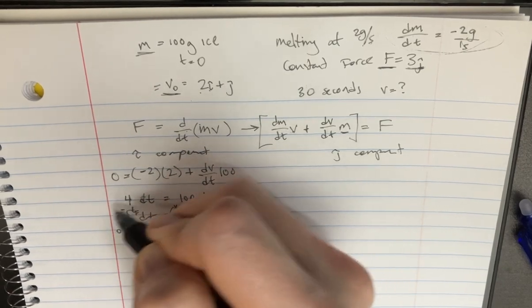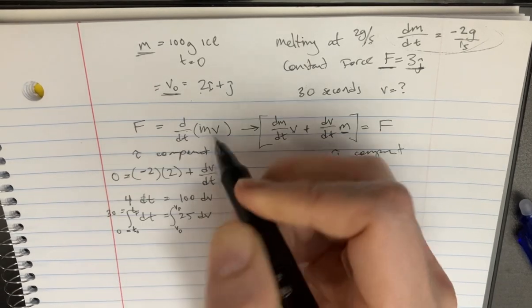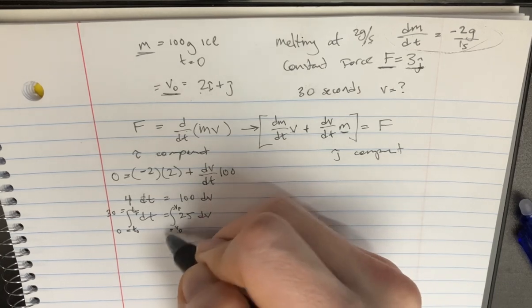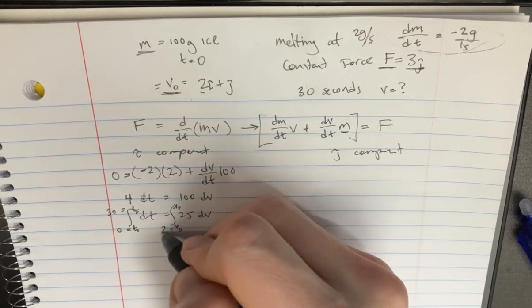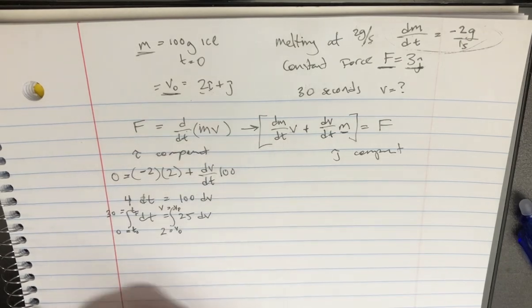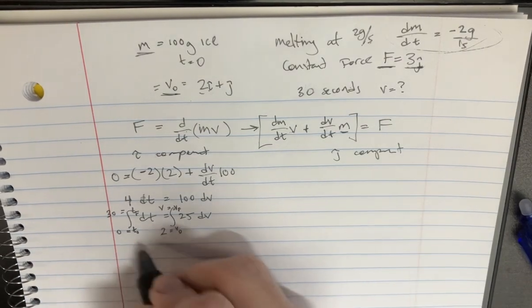What are these values? t0 is 0 and tf is supposed to be 30 seconds. And velocity initial is supposed to be 2 in the i direction. And then the final velocity, we don't know. So we're going to put that as v.